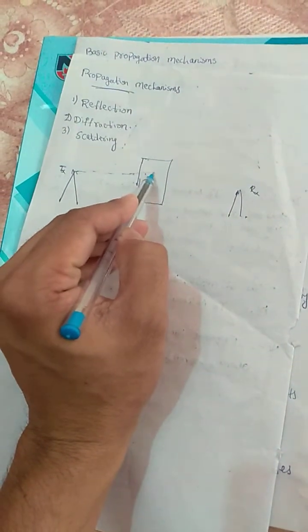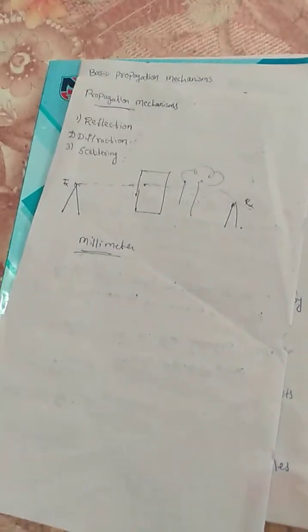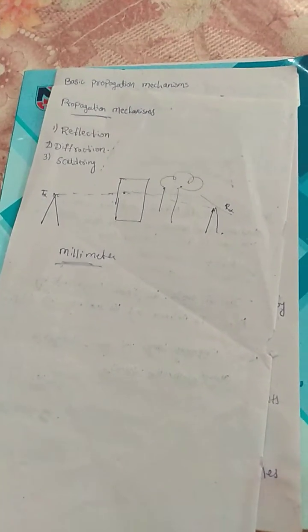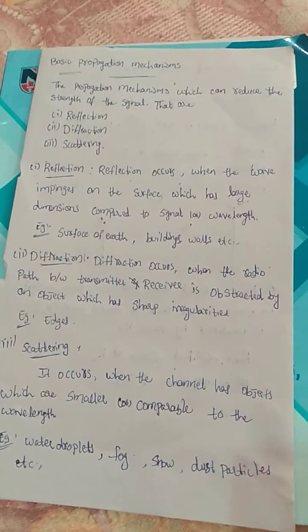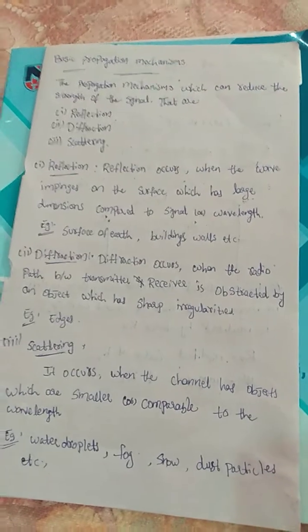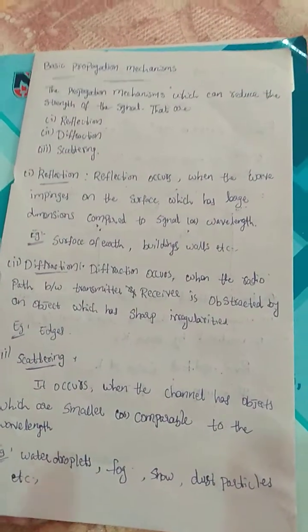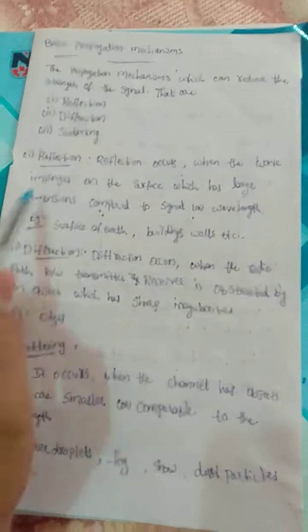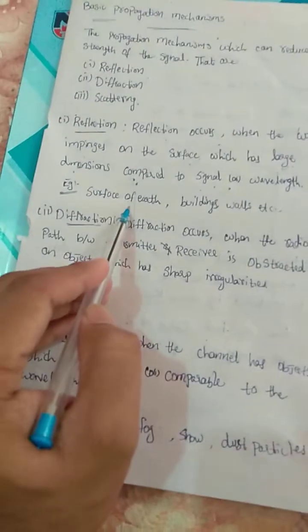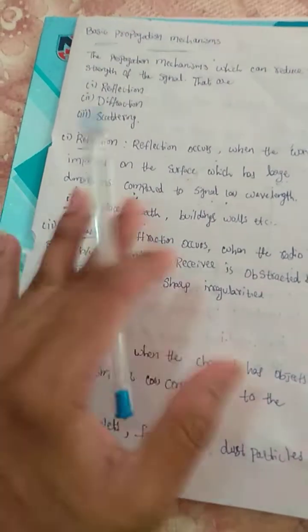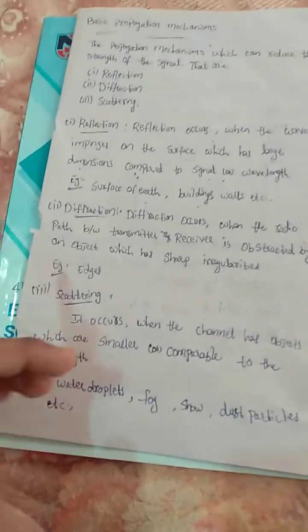When the signal is obstructed by these heavy-dimension objects such as walls, hills, and so on, there is a loss of signal. The signal is obstructed by the wall or tree and reaches the receiver. So reflection occurs when the wave impinges on a surface which has large dimensions compared to the signal or wavelength. Examples include the surface of the earth, buildings, and walls.